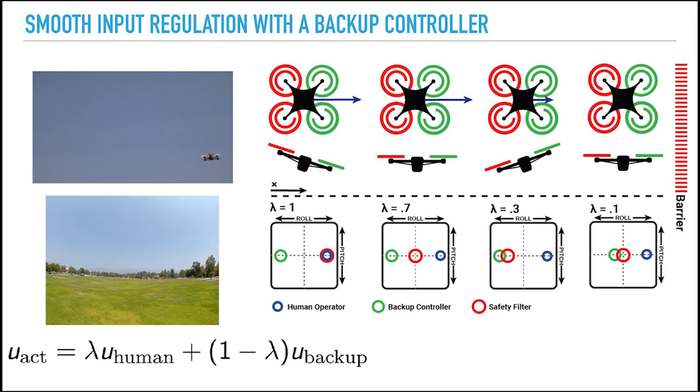We use a smooth regulation function which switches between the pilot's standard control and the backup controller. As the drone approaches the boundary, lambda approaches zero which puts the backup controller fully in control.